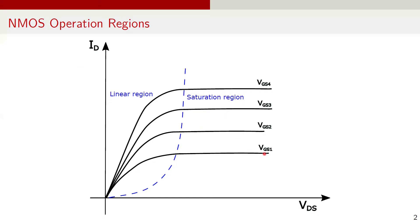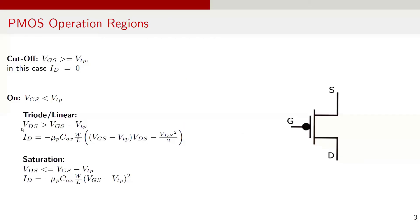If we increase VGS voltage from VGS1 to VGS2, then the drain current increases for a certain VDS voltage. Similar to NMOS, PMOS transistor also operates in three regions: cutoff, triode or linear region, and saturation region.